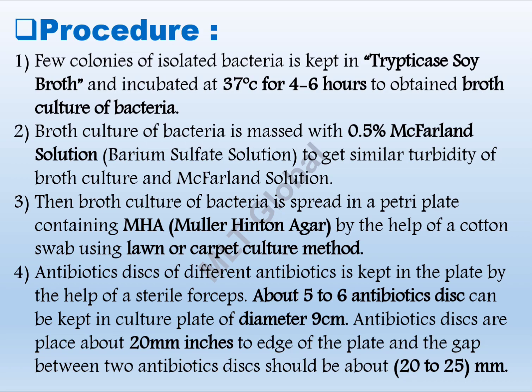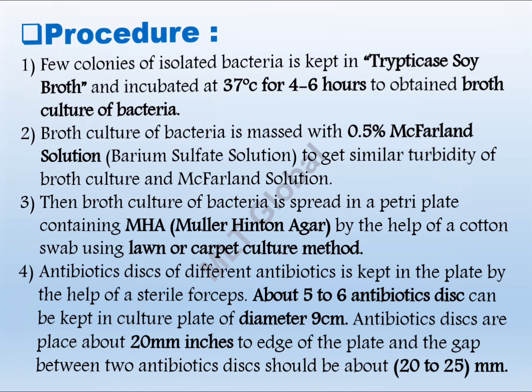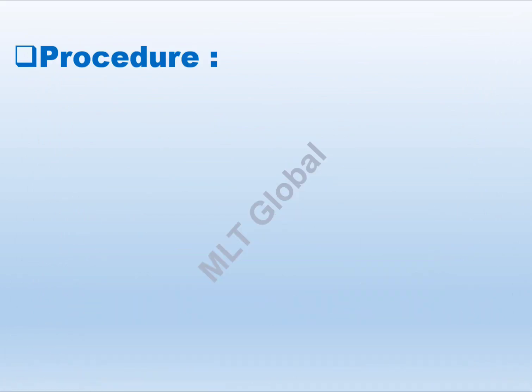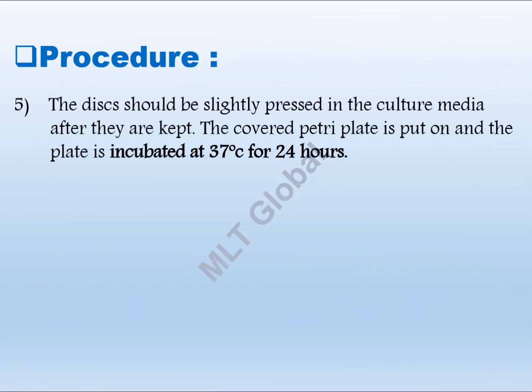Antibiotic discs of different antibiotics are placed on the plate using sterile forceps. About 5-6 antibiotic discs can be kept in a culture plate of 9 cm diameter. The antibiotic discs are placed about 20 mm from the edge of the plate, and the gap between two antibiotic discs should be about 20-25 mm.